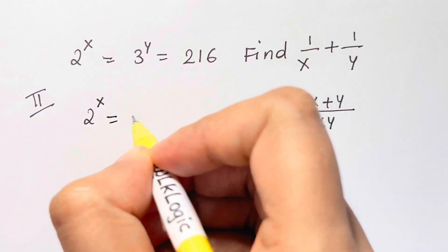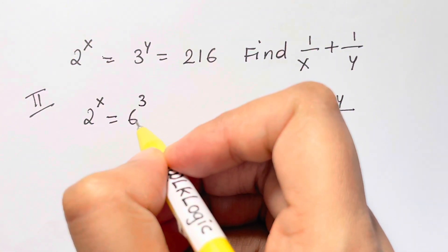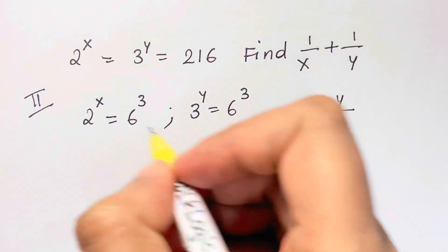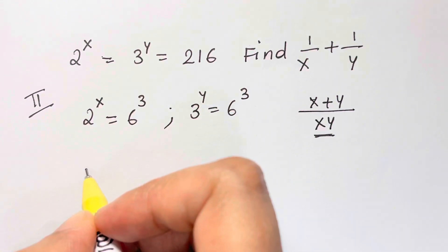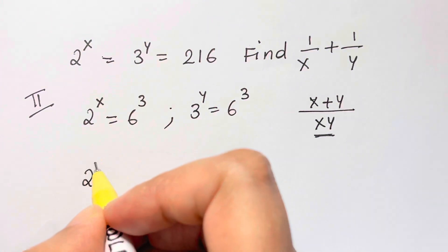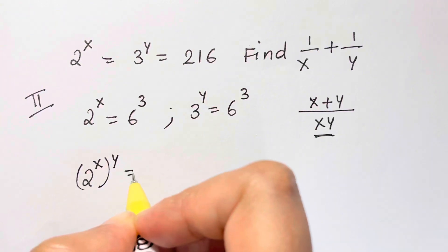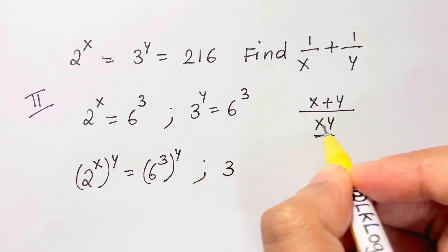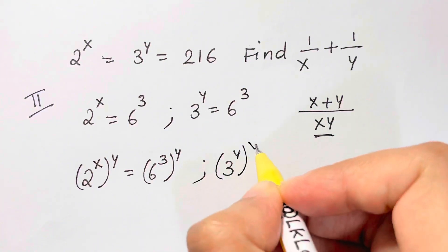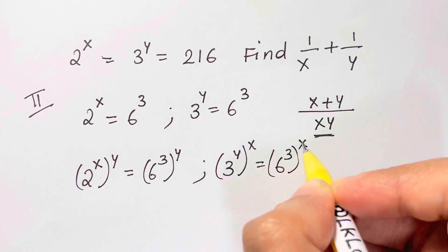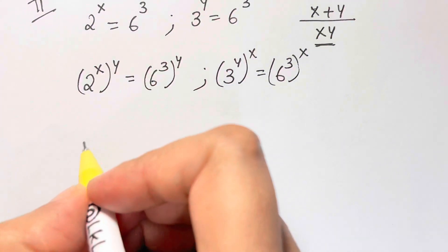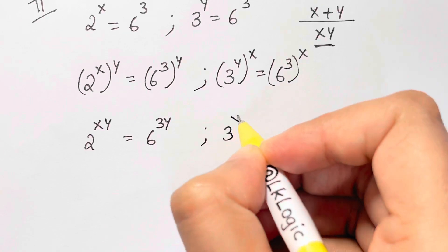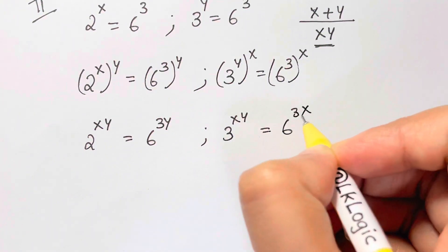So, 2 to the power of x equals 6 cubed and 3 to the power of y equals 6 cubed. To create the product xy in the exponent, I raise the first equation to the power of y: 2 to the x, whole to the power y, equals 6 cubed, whole to the power y — giving 2 to the power xy equals 6 to the power 3y. Similarly, raise the second equation to the power of x: 3 to the power xy equals 6 to the power 3x.